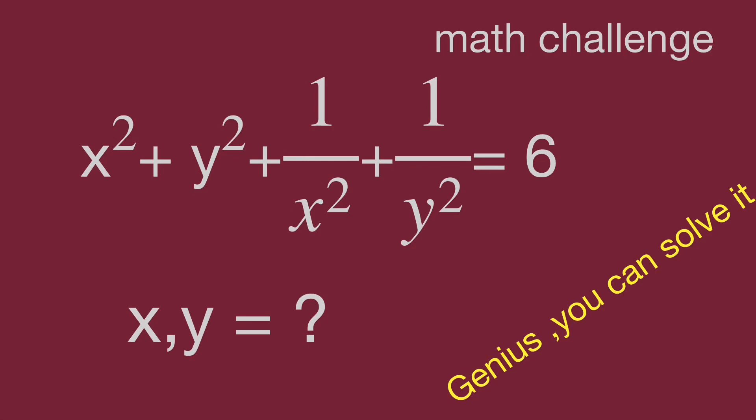The question is, while x squared plus y squared plus 1 over x squared plus 1 over y squared equals 6, find the value of x and y.